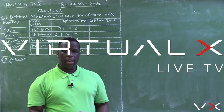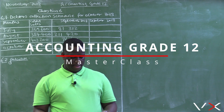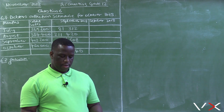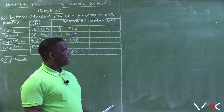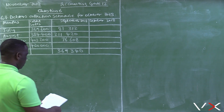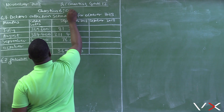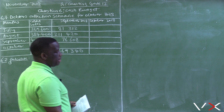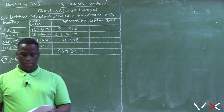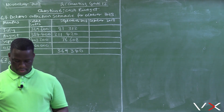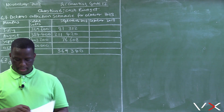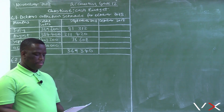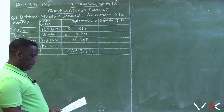Welcome back to Accounting Grade 12 Masterclass. Today we are doing November 2018 Question 6, which was written in November 2018 and is based on cash budgets. We always advise our students that you need to have a question paper in front of you to be able to follow the lesson — specifically the November 2018 question paper.